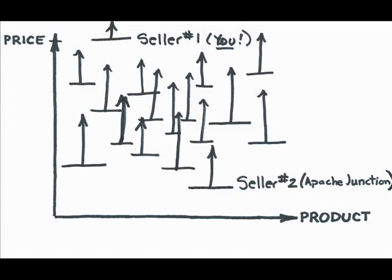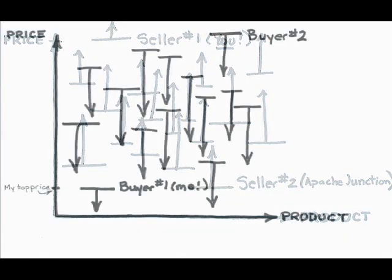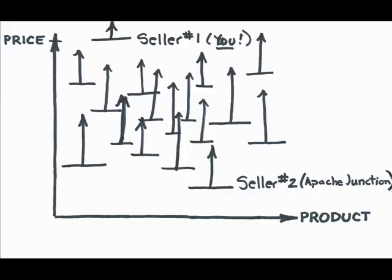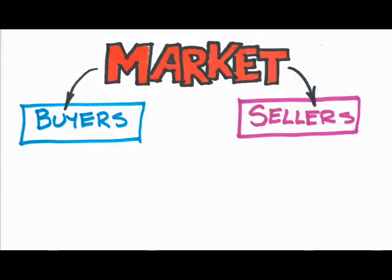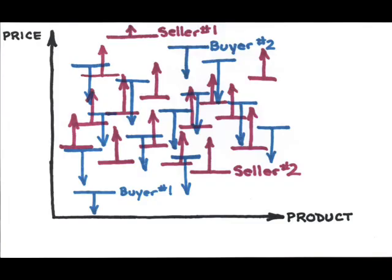Alright, so we know what's happening on the buyer's side and the seller's side, but it's not a market unless you have both buyers and sellers together. Because each side has a relationship between the price and the product, we can overlap them into one diagram.